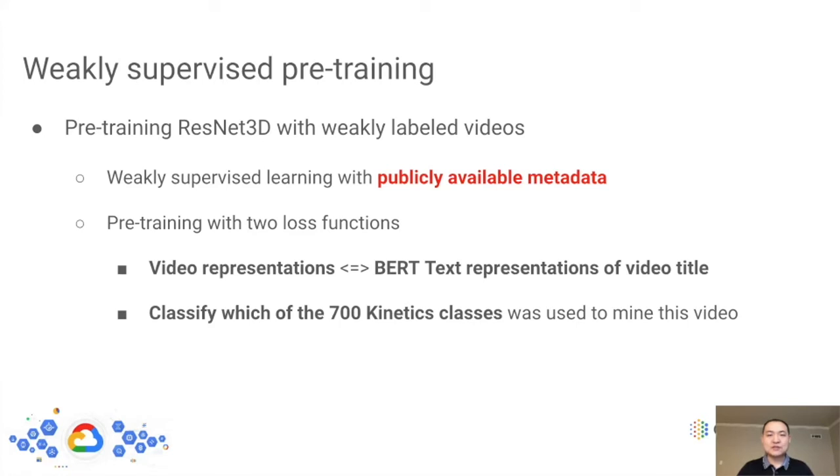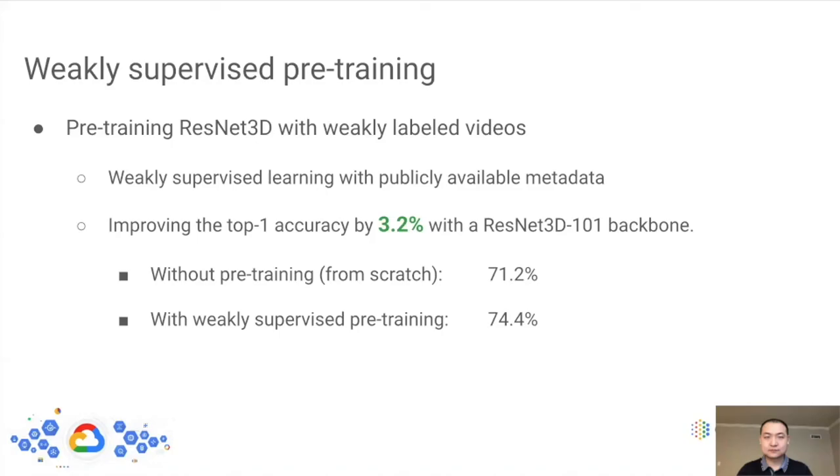Note that we carefully remove all the videos in the Kinetics Validation and Test Set from our collected data to avoid data leaking. Collecting data in this way is easy to scale and has very low cost. However, the data quality might be low due to the noises, and we also need to define a way to use the information hidden in the metadata. So what is the smart way to utilize these weak labels? Our pre-training process involves two losses which are applied simultaneously. First, we apply a ranking loss which encourages the learned video representation to be similar to the pre-computed text representation of the video title. Second, we apply a classification loss in which the model must classify which of the 700 Kinetics classes was used to mine this video.